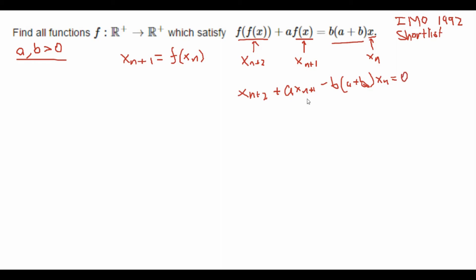But now look at what we have. We have basically a linear recurrence relation and we know how to solve those. We simply take the characteristic polynomial which is in this case x² + ax - b(a+b) equals 0.